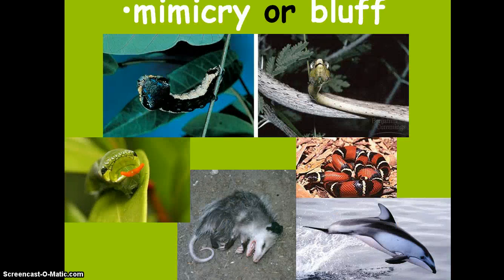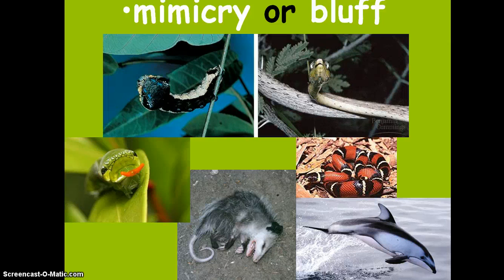Mimicry or bluff: in mimicry, an animal has colorations that make you believe it's dangerous when it really isn't, because it looks like another animal. In bluffing, the animal makes a posture as if it's going to attack when it really isn't, to get another animal to go away and leave it alone.